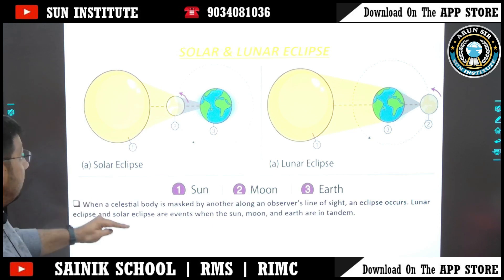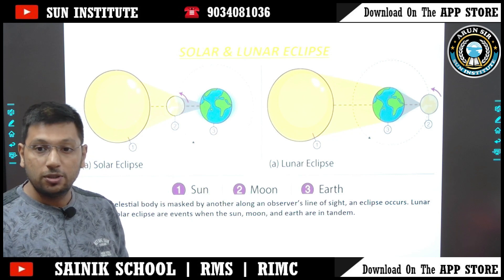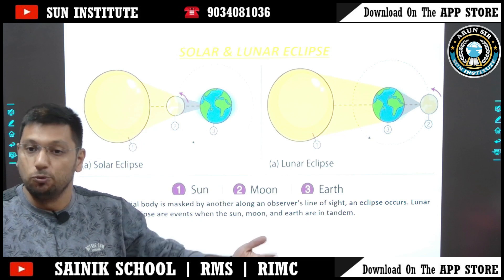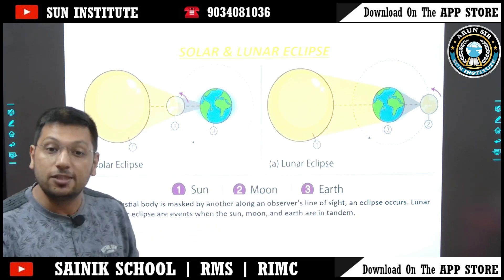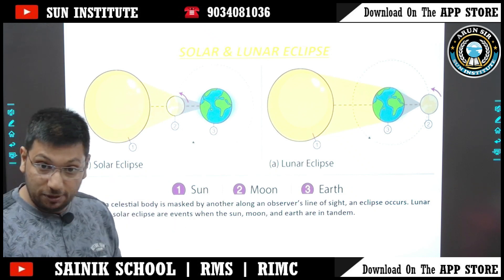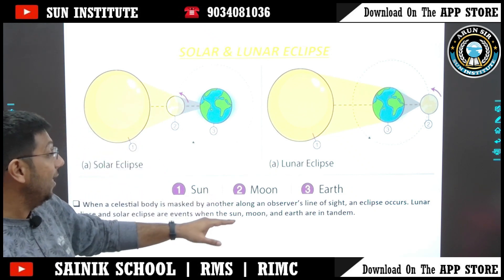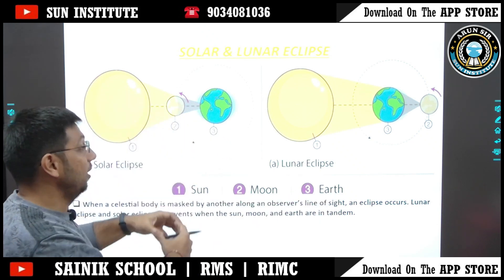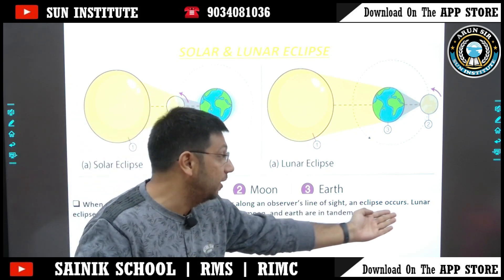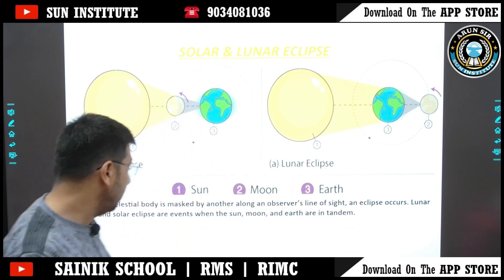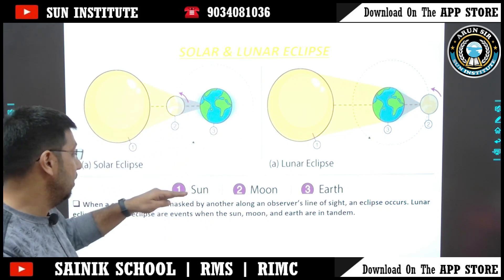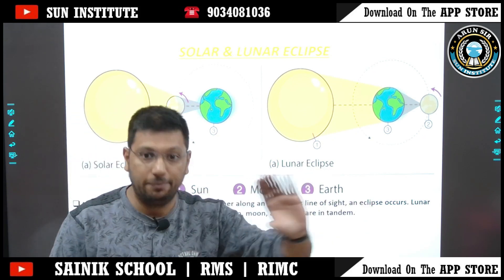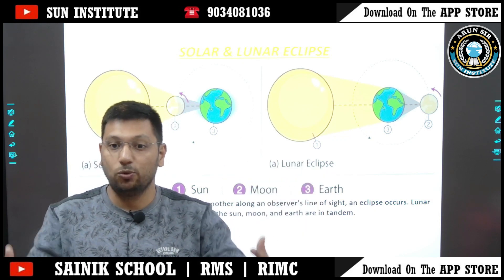So when is it that a celestial body — celestial body means space bodies, like our planets, Earth, Moon, Sun and everything, these are all together known as celestial bodies — is masked? Mask means covered, blocked. By another, along an observer's line of sight. If someone's line of sight is blocked, then we say an eclipse occurs. Lunar eclipse and solar eclipse are events when the Sun, Moon and Earth are in tandem — tandem meaning in one line, one after the other.